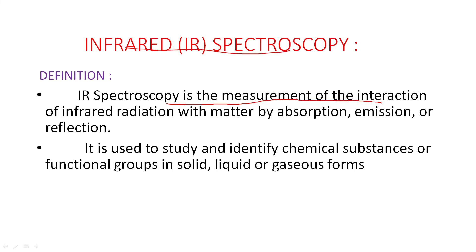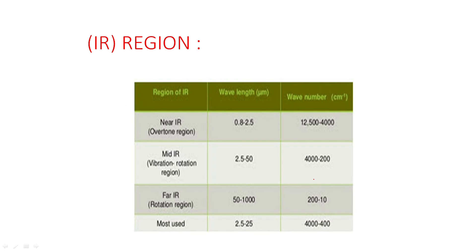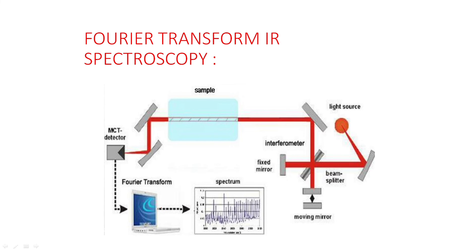Infrared (IR) spectroscopy is the study of interaction of infrared radiation with matter through absorption, emission, and reflection. It is used for identification of chemical substances. The principle is that IR radiation causes molecules to undergo changes in vibration and rotation. IR regions are: Near IR (12,500–4,000 cm⁻¹), Mid IR (4,200–200 cm⁻¹), and Far IR (200 cm⁻¹ and below).